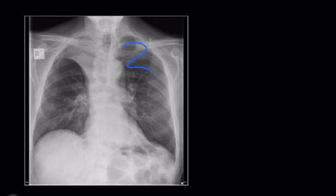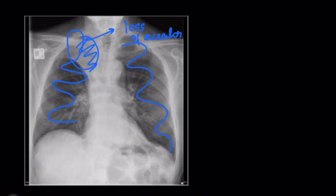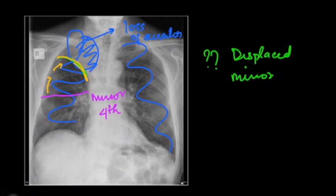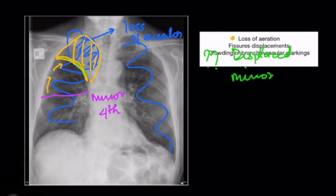In the next figure there is an opacity with a sharp border, which is the displaced minor fissure. This demonstrates the importance of knowing fissures in the radiograph. The minor fissure is normally expected in a horizontal position at around the level of the fourth rib. Here the fissure has moved upward and bordered the collapsed lung. This is the second direct sign of collapse — fissure displacement. We have now seen loss of aeration and fissure displacement.